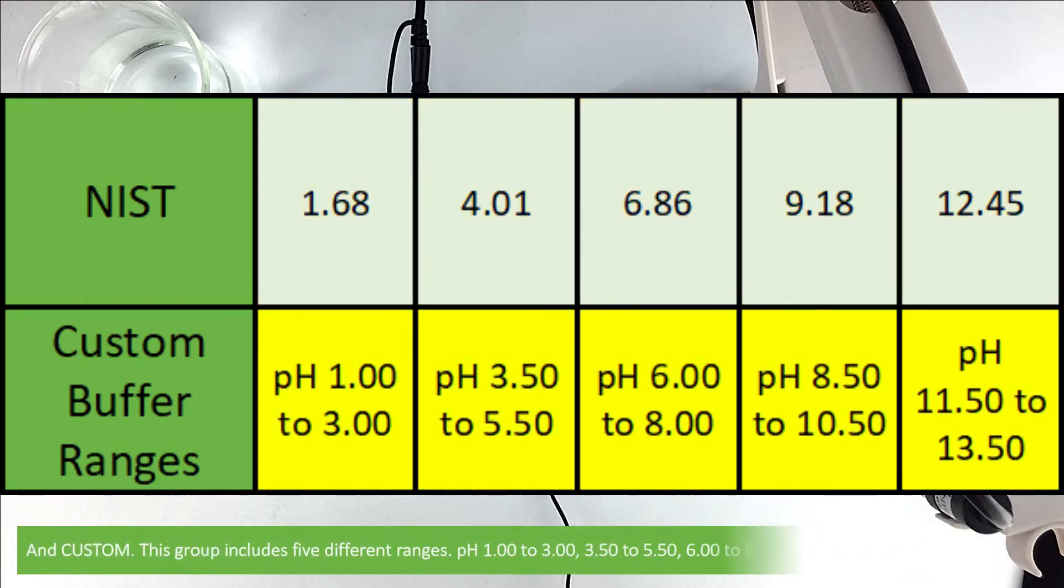And custom. This group includes five different ranges. This is pH 1-3, 3.5-5.5, 6-8, 8.5-10.5, and 11.5-13.5.